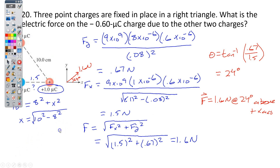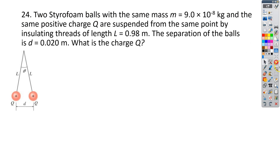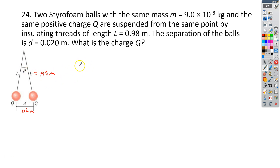The last problem is number 24. We have two styrofoam balls that both have the same mass of 9 times 10 to the negative 8 kilograms and the same positive charge Q. They're suspended from the same point by insulating threads with a length of 0.98 meters. The balls are separated by a distance of 0.02 meters. We want to know what is the charge on these. First, let's do a free body diagram for one of the charges.